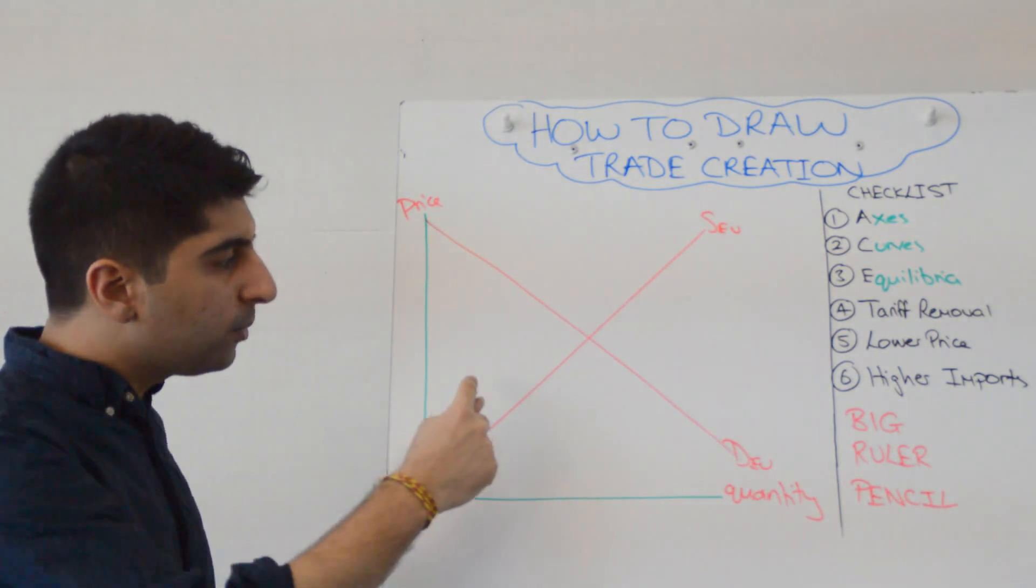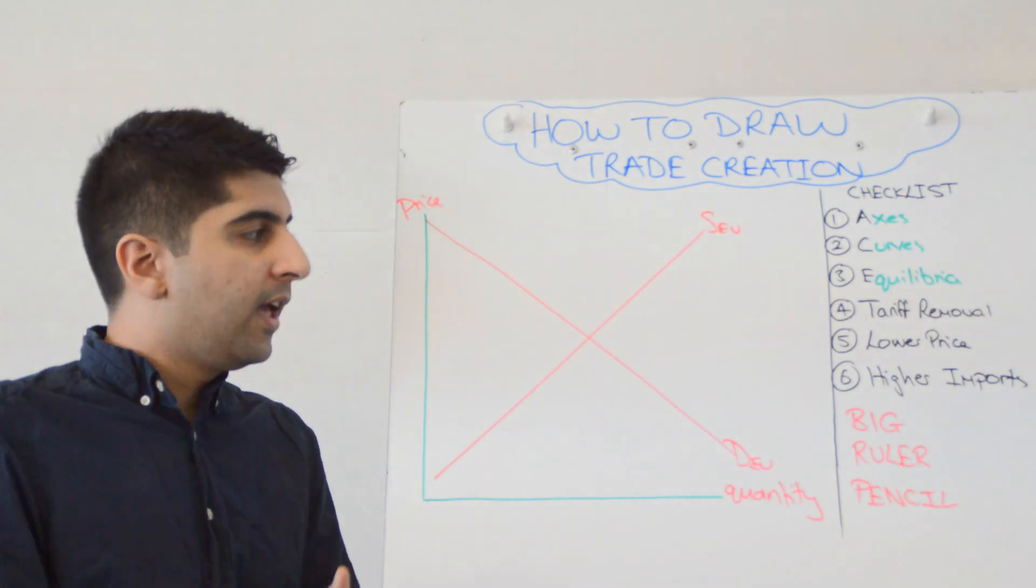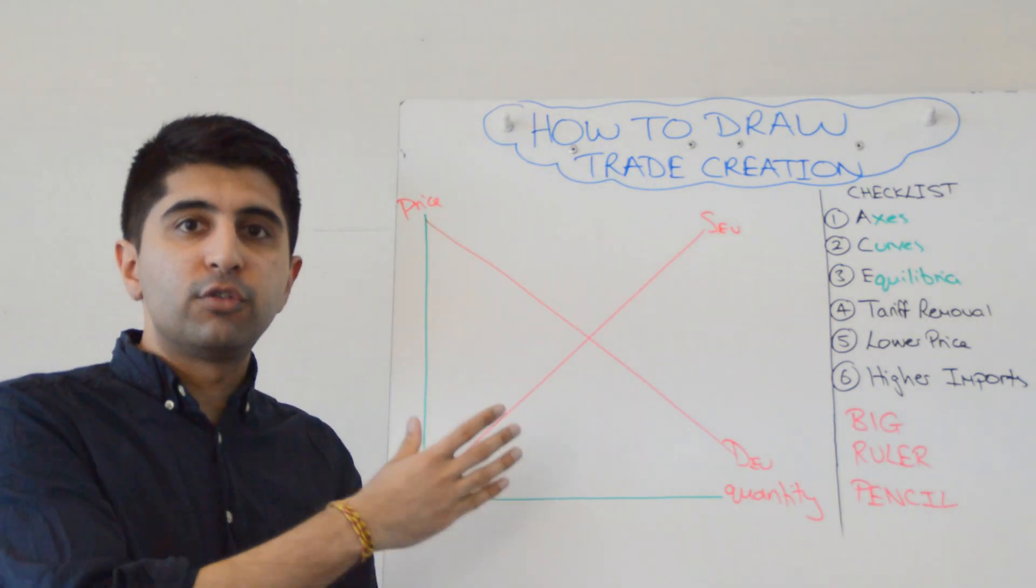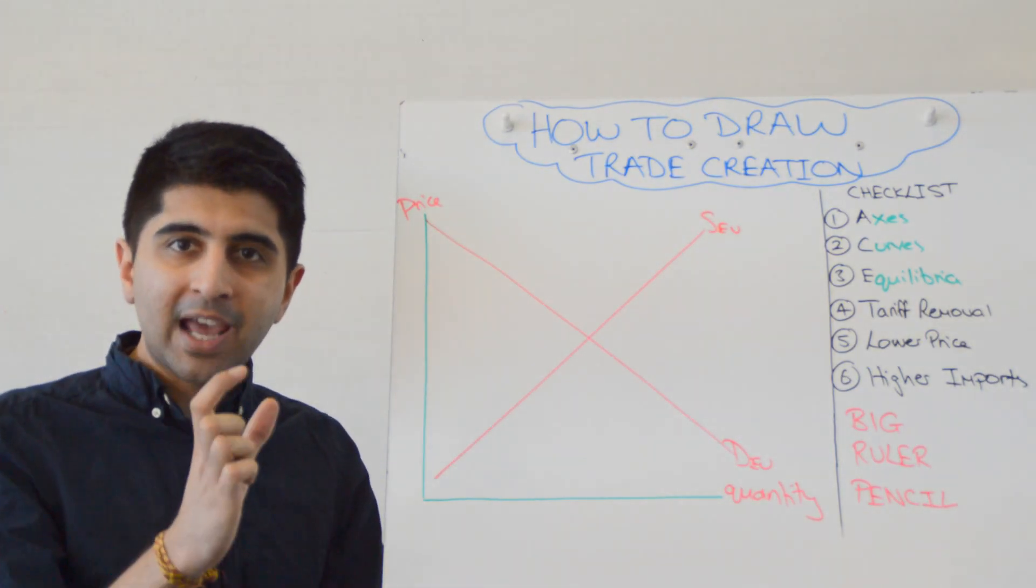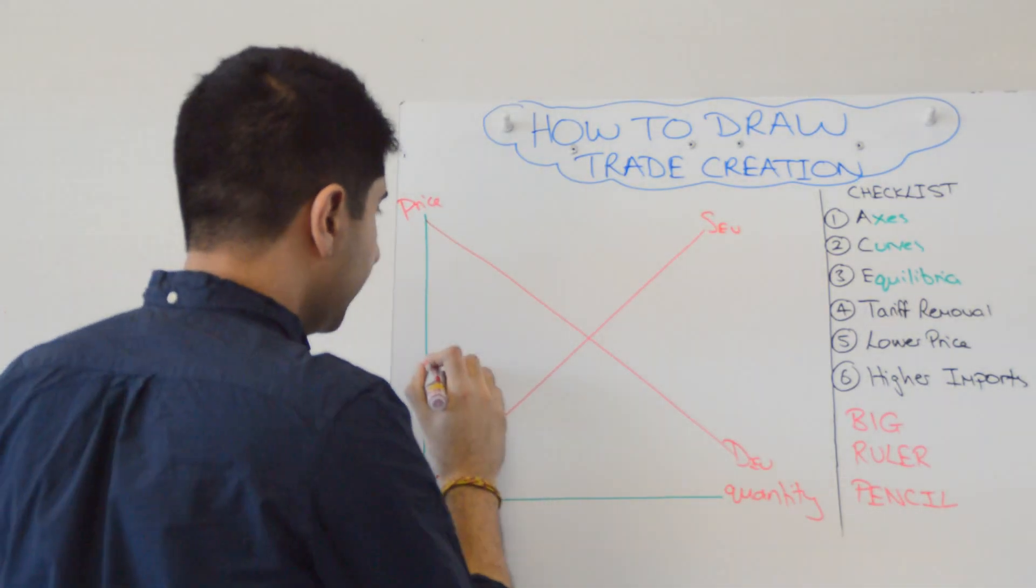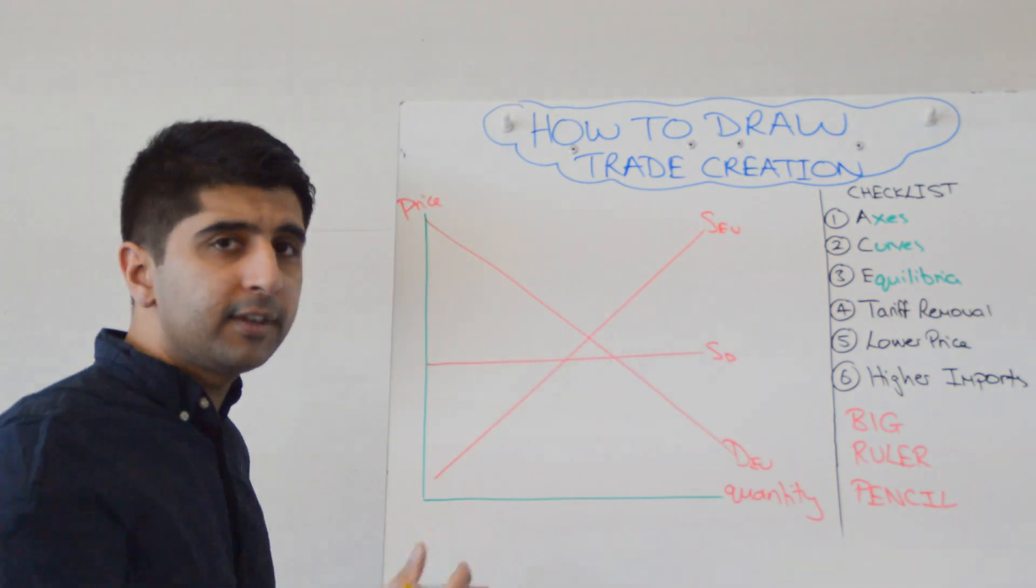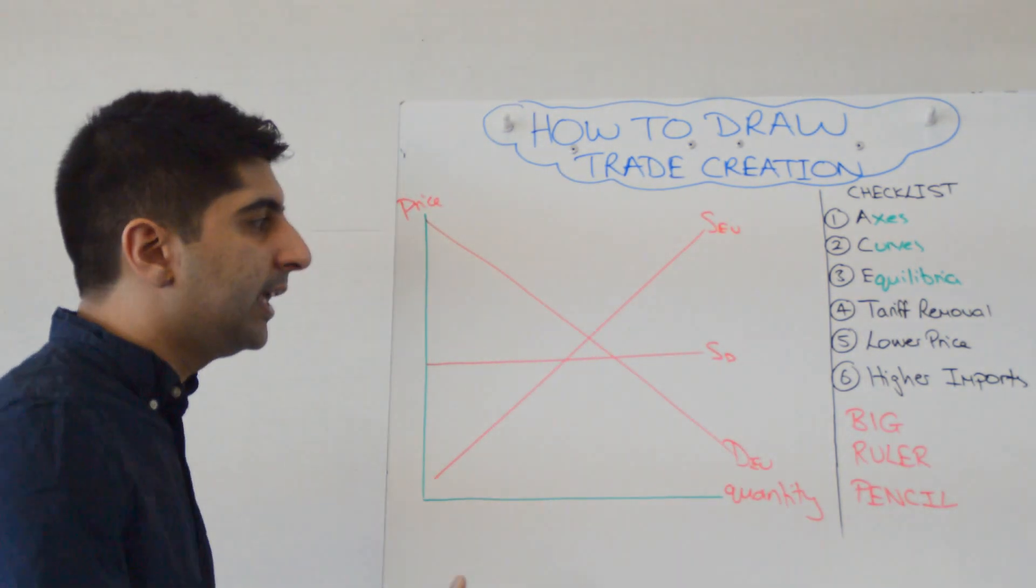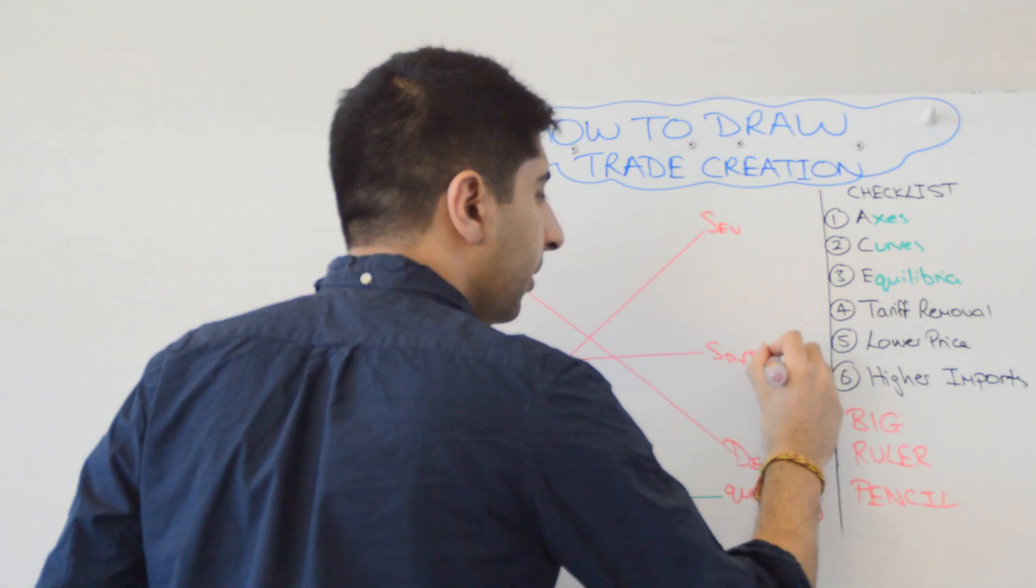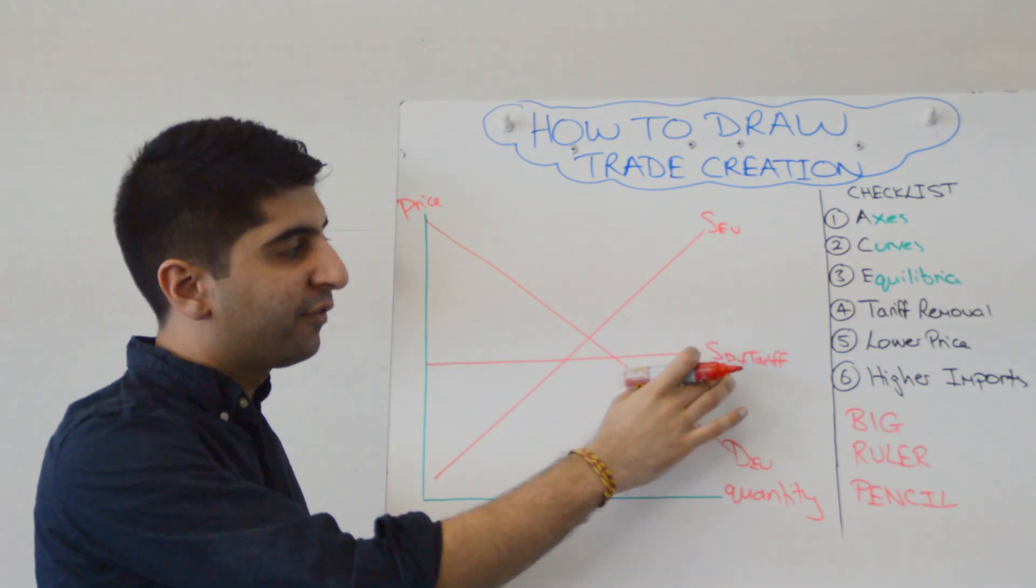And we're going to assume that another country, we call it a domestic country, is currently outside the EU. Therefore, any exports for this country to the EU must have a tariff, a common external tariff, on top. So we'll draw a supply curve on here. And that is the supply curve of a domestic country currently outside the EU. Therefore, there is a common external tariff imposed on all imports coming into the EU from this country.